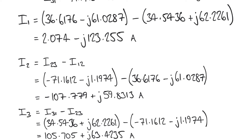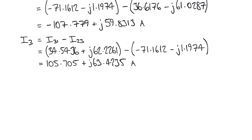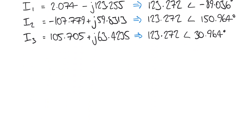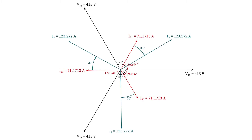At the moment we have these three line currents in rectangular form. We can convert each of these to polar form, giving us three line currents that look something like this. Again, based on the fact that we have a balanced network here, we see that confirmed in that the magnitudes of each of these line currents are equal. One last thing we can do is plot everything on a phasor diagram.